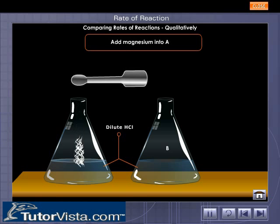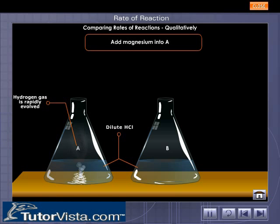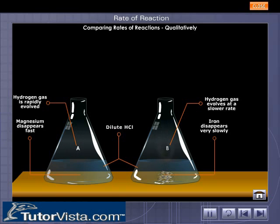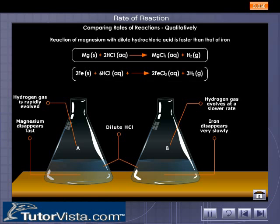A small amount of magnesium is dropped into flask A and a small amount of iron is dropped into flask B. Both iron and magnesium react with dilute hydrochloric acid, liberating hydrogen gas. Evolution of hydrogen gas is faster in A than in B. Magnesium disappears faster than iron. We conclude that the reaction of magnesium with dilute hydrochloric acid is faster than that of iron.